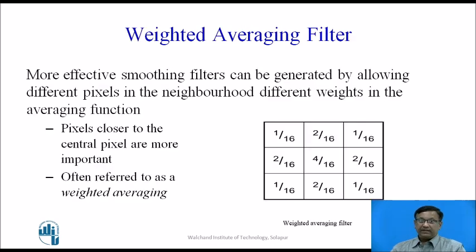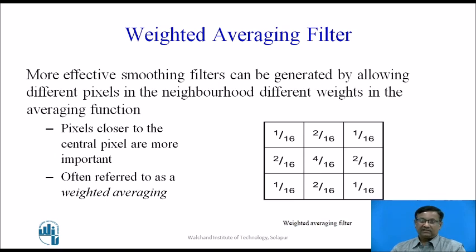More effective smoothing filters can be generated by giving different pixels in the neighborhood different weights in the averaging filter. This is called a weighted averaging filter. Here, pixels closer to the central pixel are more important. The weight assigned to the center pixel is 4, while the adjacent pixels (right, left, top, bottom) are assigned a weight of 2, and the diagonal pixels have the smallest weight of 1.